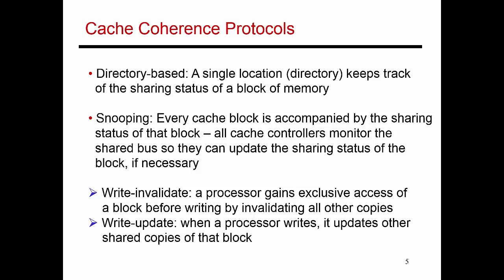In the last video, I'd gone through an example of a snooping-based cache coherence protocol. In that case, I had processors and caches with a shared memory system, and they all had a symmetric view of the shared memory system. They were all accessing the shared memory system through a shared bus. It turns out that this is a reasonable design choice if you're trying to connect four processors or eight processors, but very soon, having a shared centralized resource becomes a bottleneck.